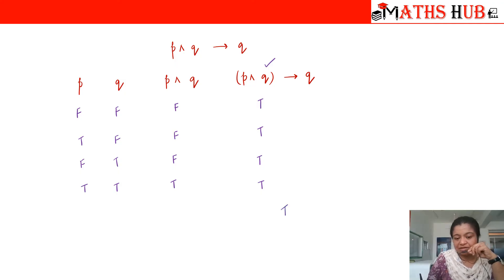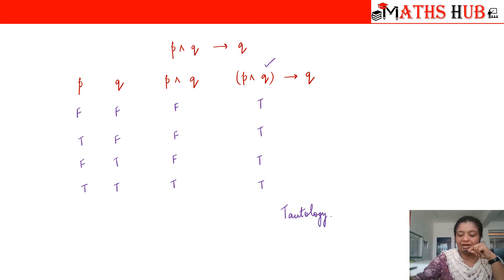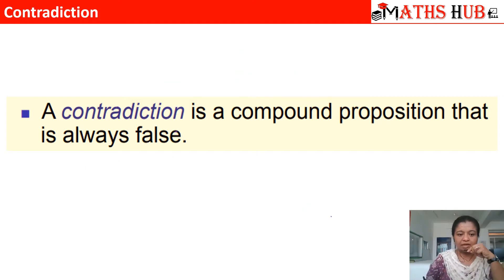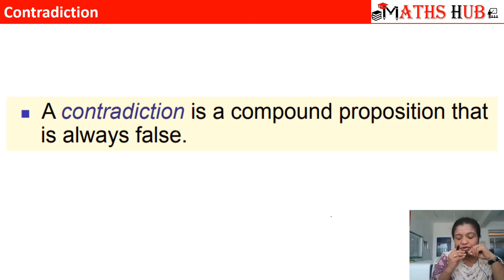So this statement will be called a tautology. Now let's move on to the second type. In the second type we have a contradiction. Contradiction is the compound proposition that is always false.